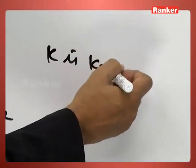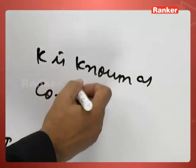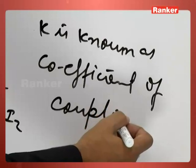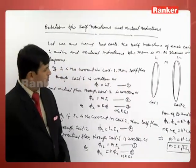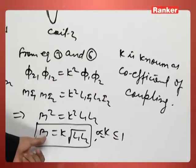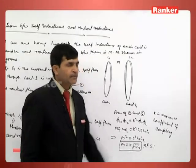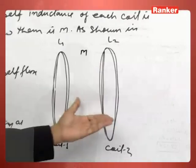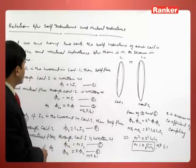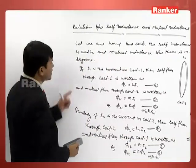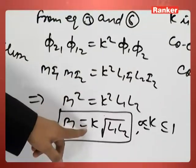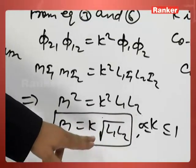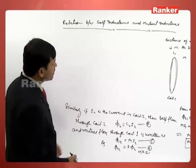K is known as the coefficient of coupling, and its value always lies between 0 and 1. This is the relation between mutual inductance M, self-inductances L1 and L2. The coefficient of coupling describes how these two coils are coupled or how they are positioned relative to each other.